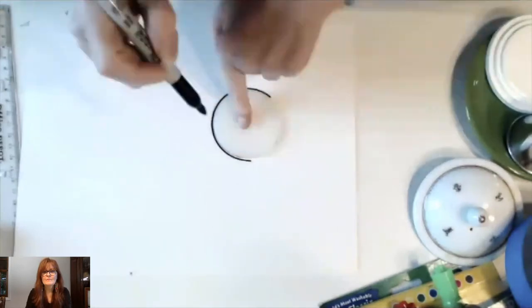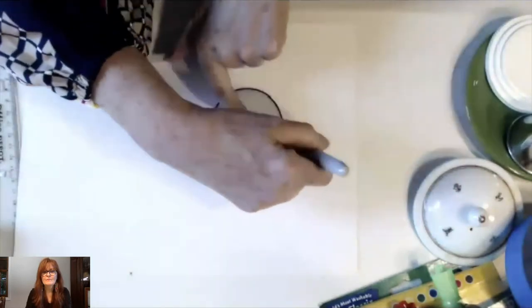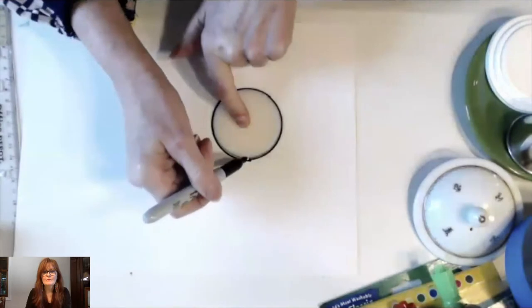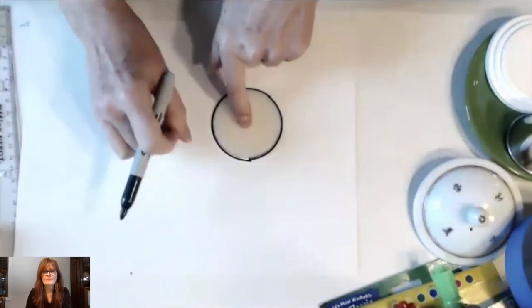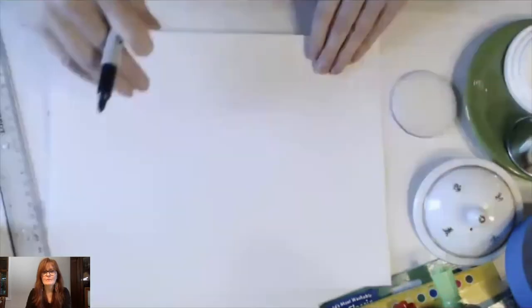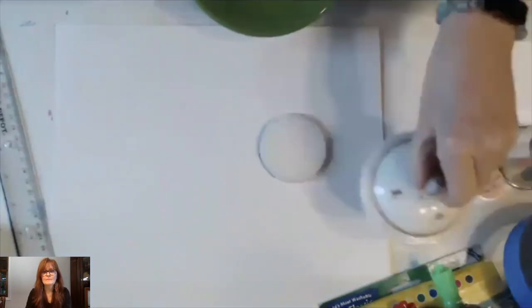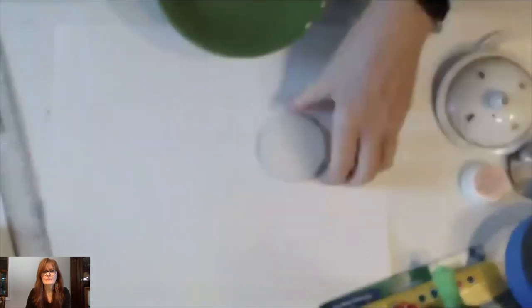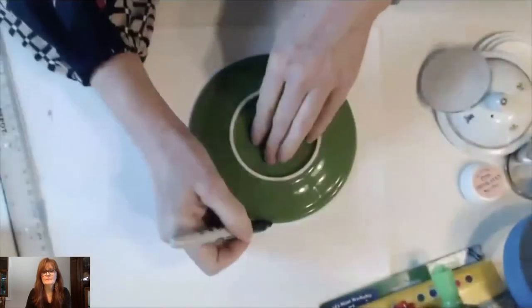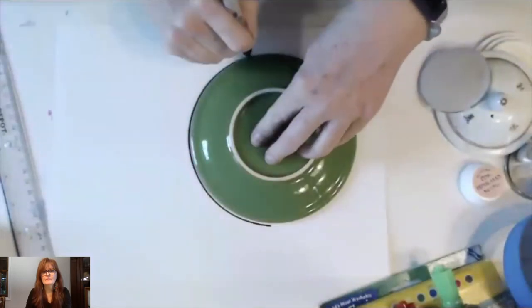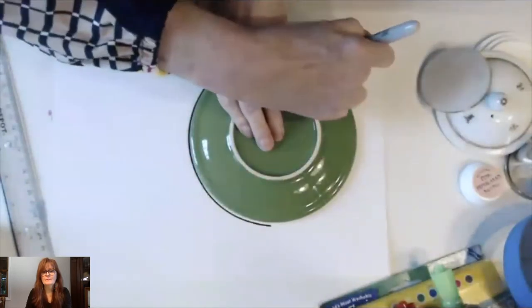So whenever you're tracing shapes, you want to make sure that your edge of your pen or whatever you're drawing with is bumped up against the edge of it. So I would start with larger shapes and then go smaller because if you start with something small and then you put something big over it, you can't see where it was. Or if we start with something big, a big circular shape, making sure you bump the edge.